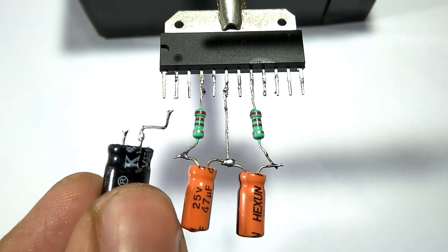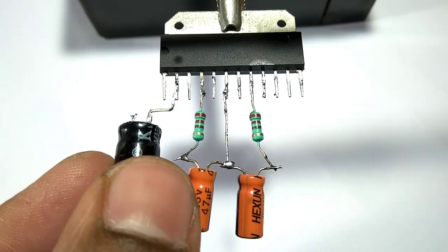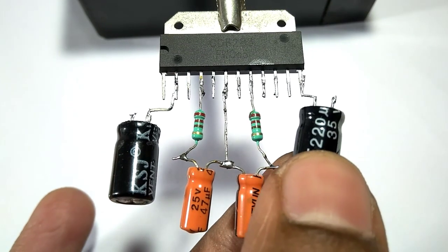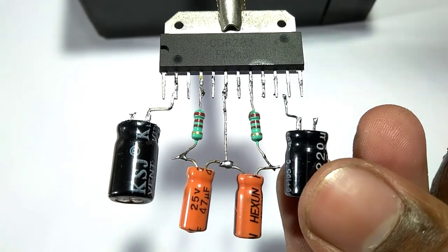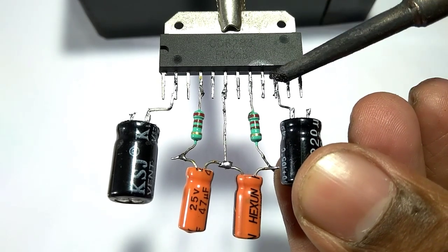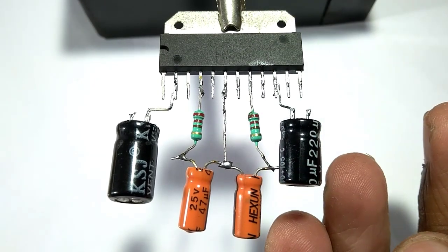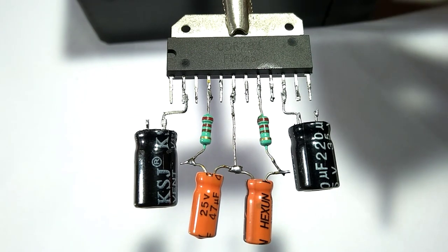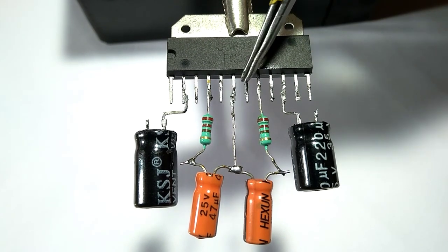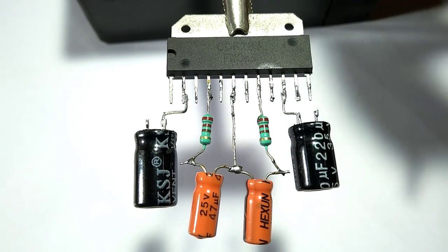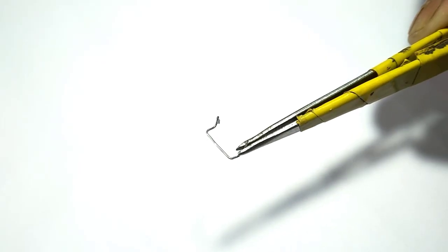And one capacitor to IC pin 10. Then I connect IC pin 6 and pin 9 together using wires, so as you can see I joined this wire.